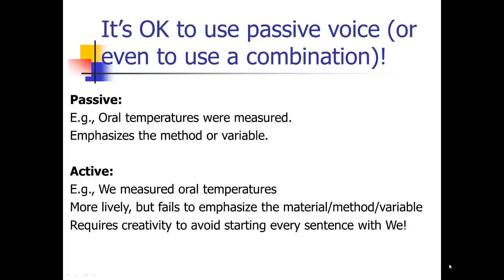The active voice here would be 'we measured oral temperatures,' and that's okay. It's more lively, but it fails to emphasize the material, method, or variable. In order to put the whole method section in the active voice, you have to be really creative, because it's mostly 'we,' it's mostly the authors who are doing all the actions. To avoid starting every sentence with 'we,' you're really going to have to be very creative, and it's probably just not worth that much effort. So the one section I'm going to say, if you want to use some passive voice, is the method section.